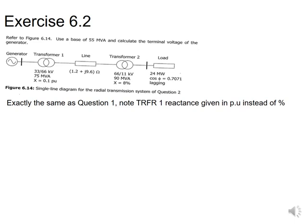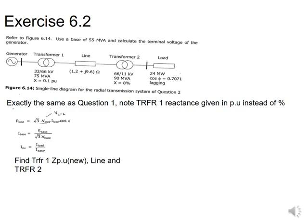Moving to exercise 6.2, you follow the same steps as 6.1. Note the slight difference: for transformer 1, x is given as 0.1 per unit — already in per unit, not percentage. This does not mean you use that 0.1 directly without adjustment. You still start with the load to calculate I load, then I base, and then I per unit. For transformer 1, you take that 0.1 per unit value and multiply by 55 divided by 75.